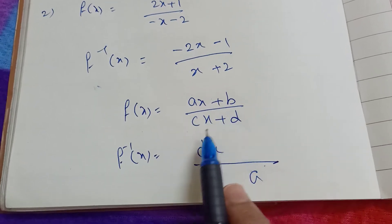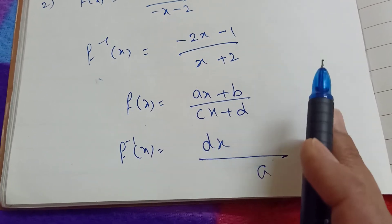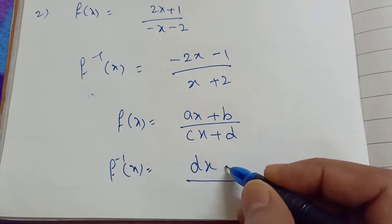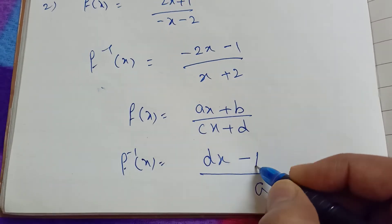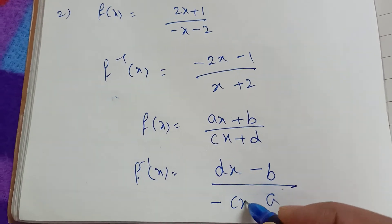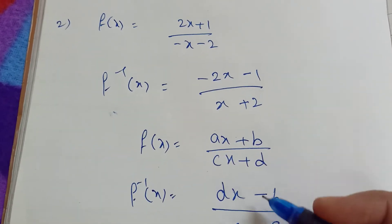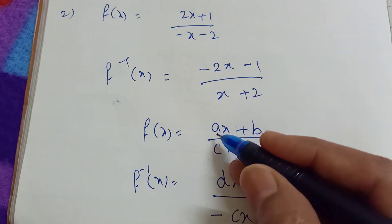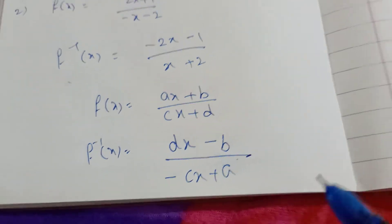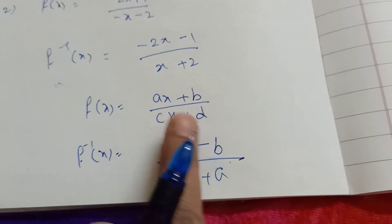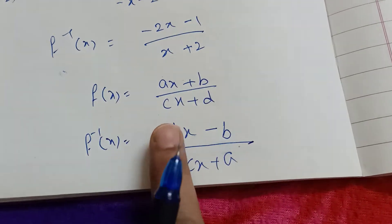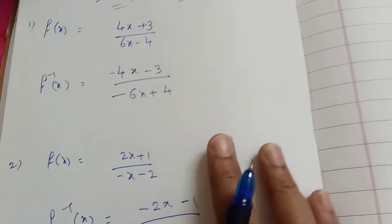Here the sign is negative. Minus becomes plus, and the remaining two places have opposite signs. We interchange the places of a and d and apply the minus values to the other terms.